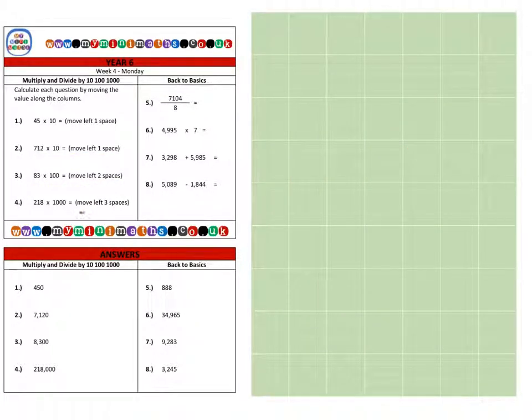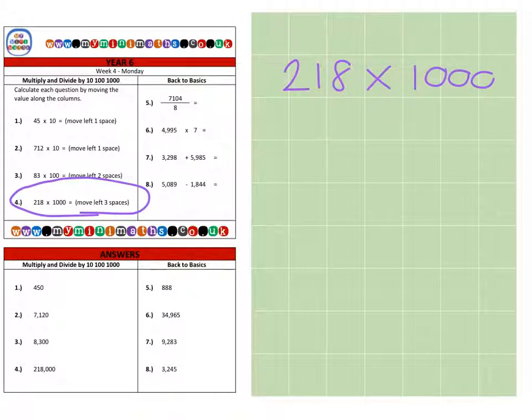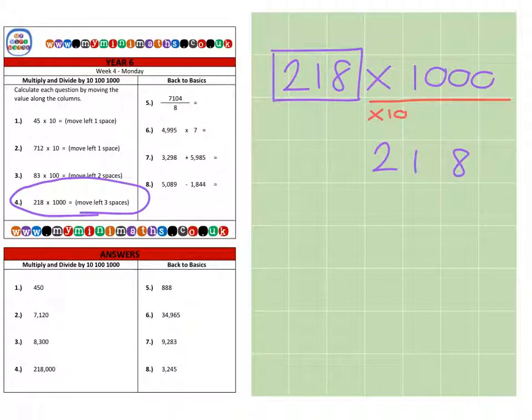And finally, on to question four, our last question for today, which is 218. And we're multiplying that by 1,000. So first of all, if I take my 218, I'm going to multiply it by 1,000, which is the same as saying times ten, times ten, times ten. So that's three spaces larger, three spaces to the left.